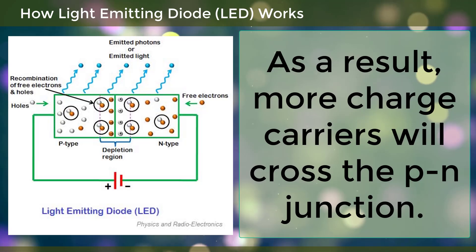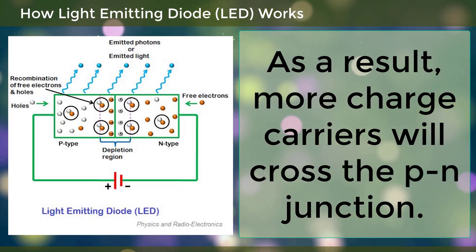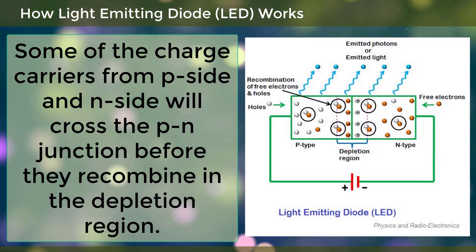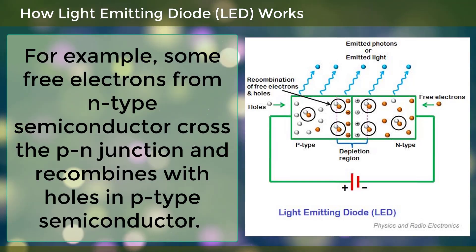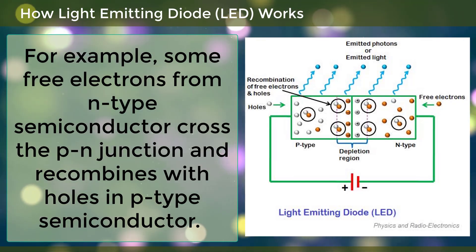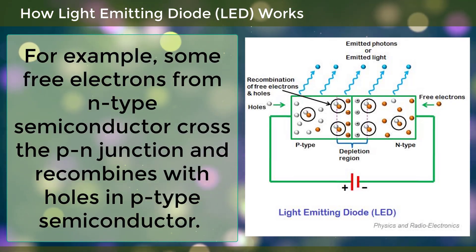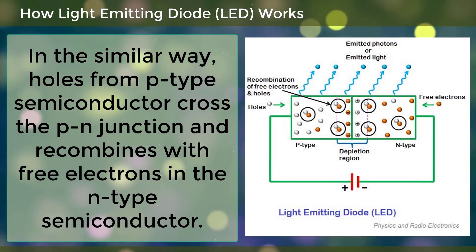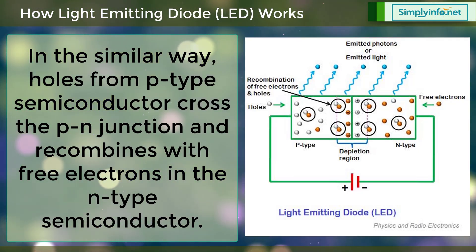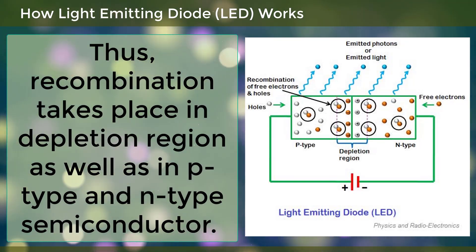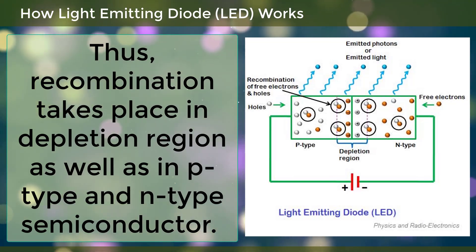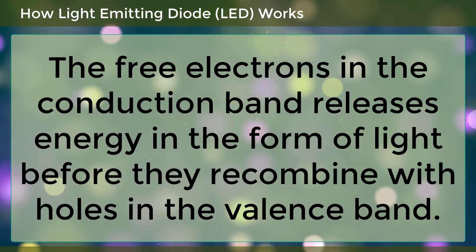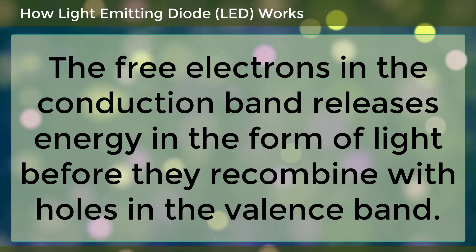As a result, more charge carriers will cross the PN junction. Some free electrons from the N type semiconductor cross the PN junction and recombine with holes in the P type semiconductor. Similarly, holes from the P type semiconductor cross the PN junction and recombine with free electrons in the N type semiconductor. Thus, recombination takes place in the depletion region as well as in the P type and N type semiconductors. The free electrons in the conduction band release energy in the form of light before they recombine with holes in the valence band.